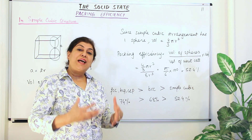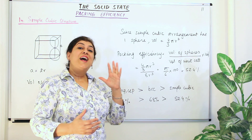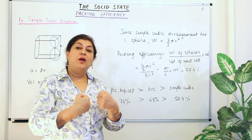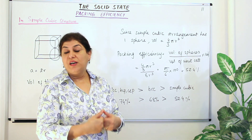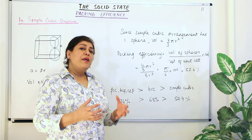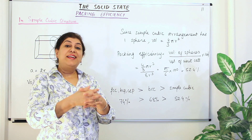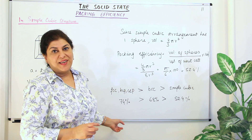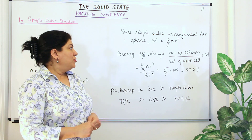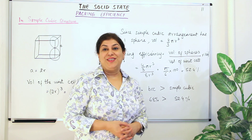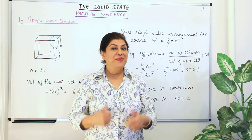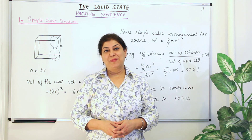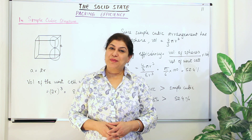Comparing all three: FCC (or HCP/CCP) has the highest packing efficiency at 74%, BCC is 68%, and simple cubic is 52.4%. This shows that FCC packing is the most compact arrangement of constituent particles in a solid. If you found the video helpful, please give it a thumbs up, subscribe to my channel, and keep returning for more chemistry videos. Thank you for watching!